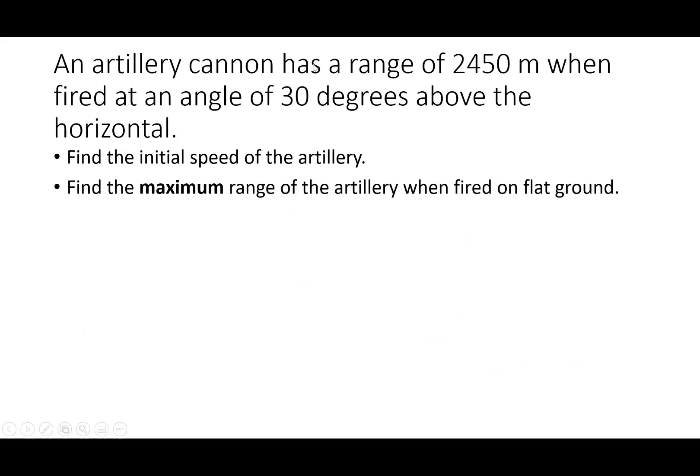So let's do an example. An artillery cannon has a range of 2450 meters when fired at an angle of 30 degrees above the horizontal. Find the initial speed of the artillery and find the maximum range of the artillery when fired on flat ground. So I can draw a diagram. My artillery is fired at an angle of 30 degrees at some unknown initial velocity. And it lands some distance away, 2450 meters.